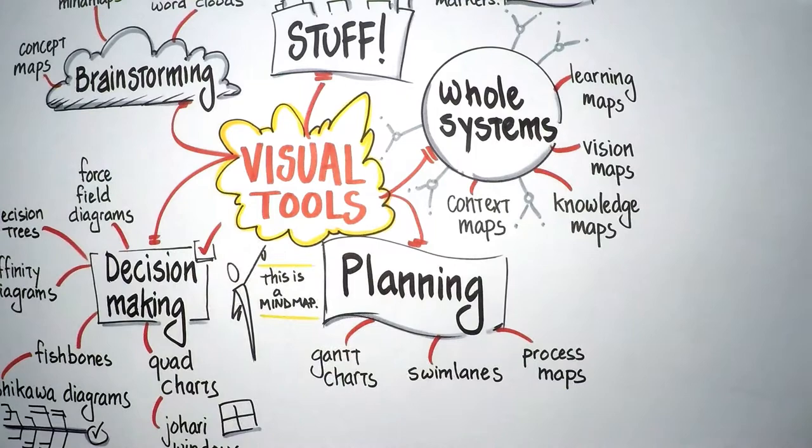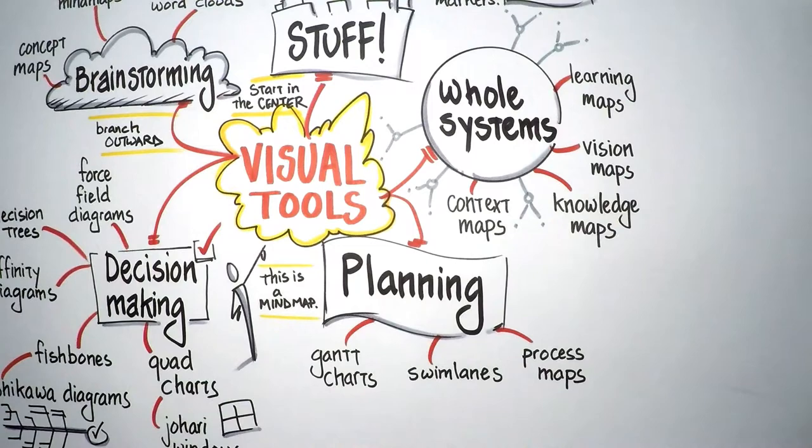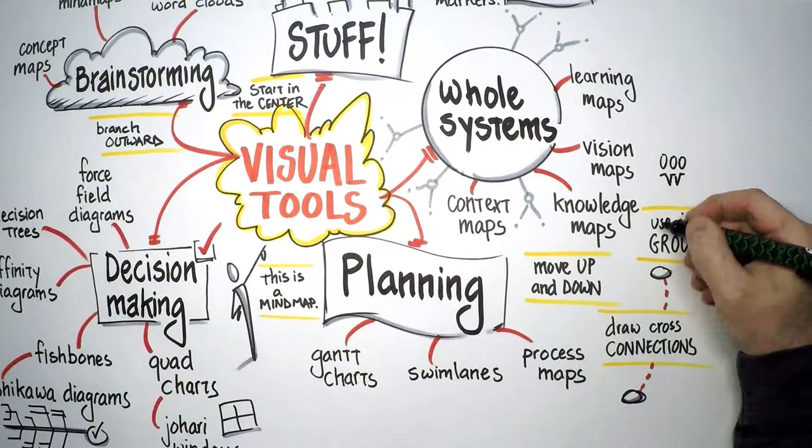You start with a central image or idea. From there you branch outward, following key ideas as they occur. You move up and down in levels of detail, adding new branches to the trunks, following wherever your mind goes. You draw cross connections as ideas interrelate. One idea will suggest another. And used in a group setting, a mind map grows like wildfire.